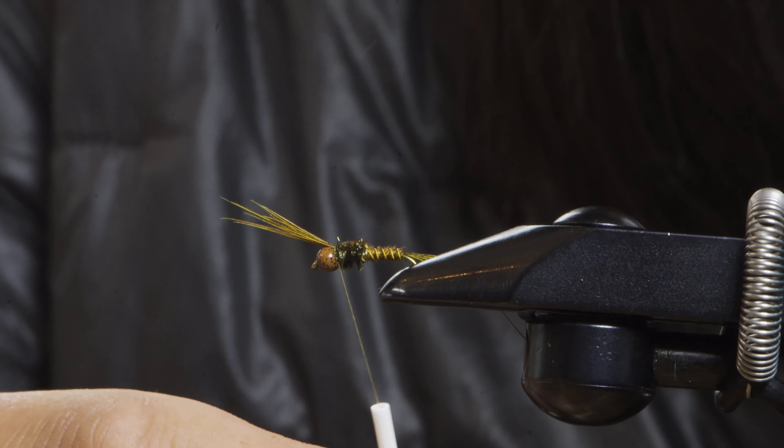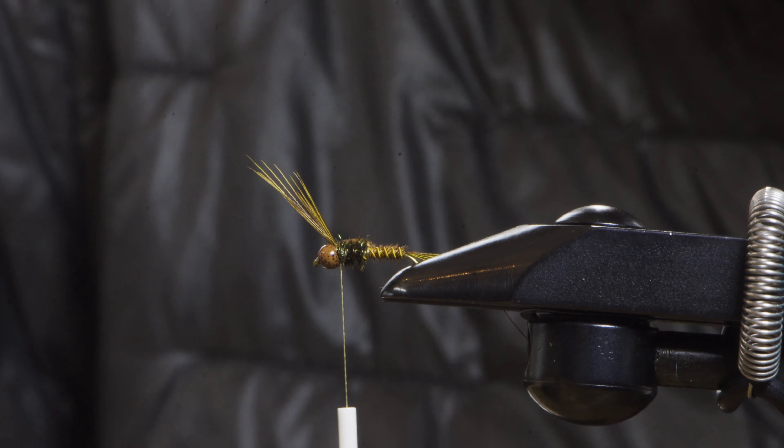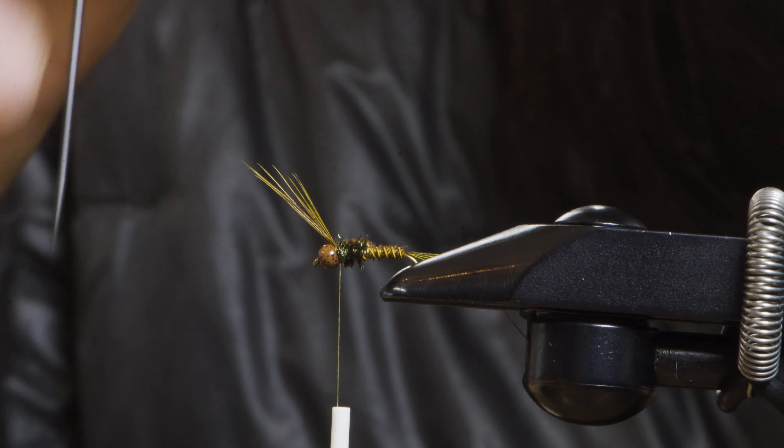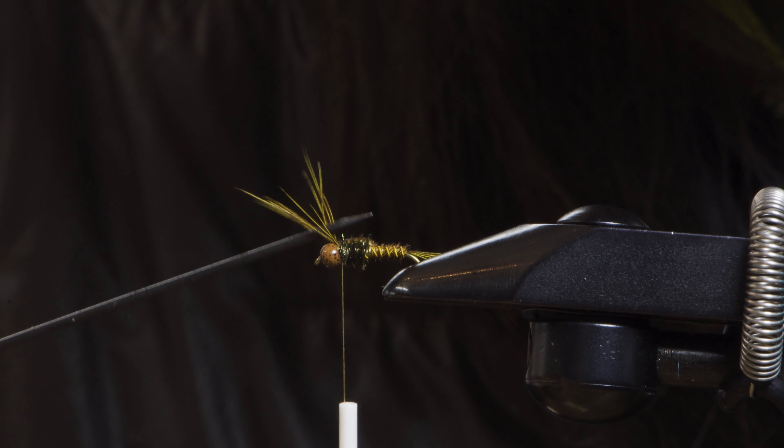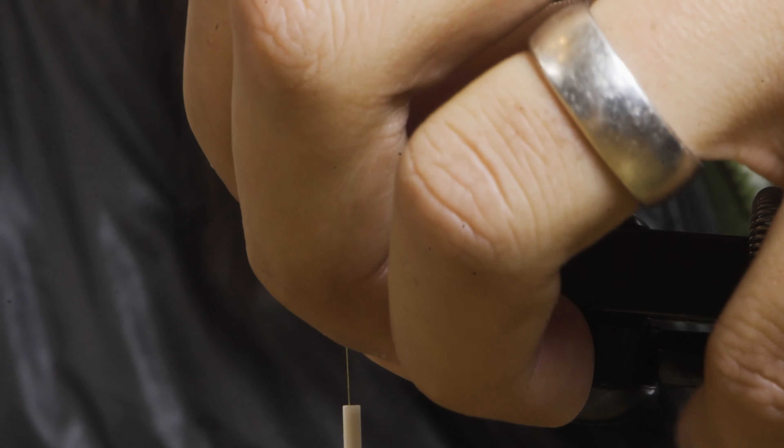After we have the thorax, we're going to bring our pheasant tails to the front and create a wing case. Secure that with a couple of wraps at the top. This is a very standard way of creating mayfly legs and wing cases. If you're ever tying any other flies, you probably recognize this process.